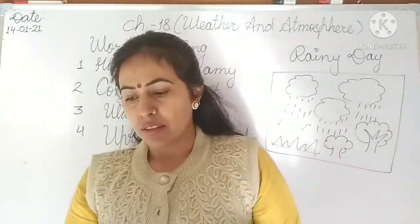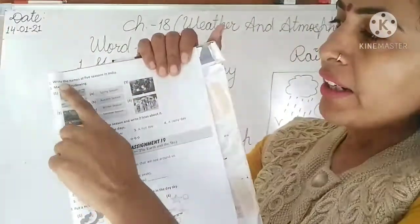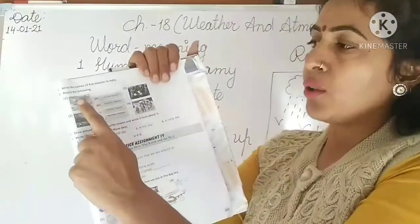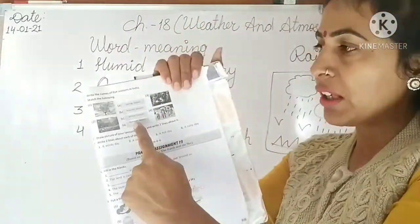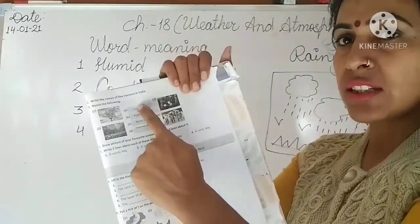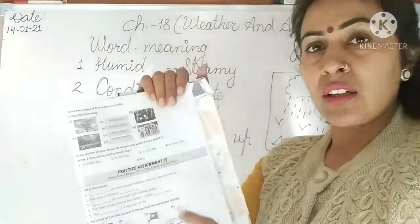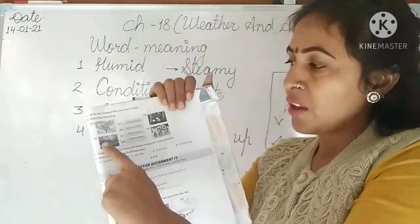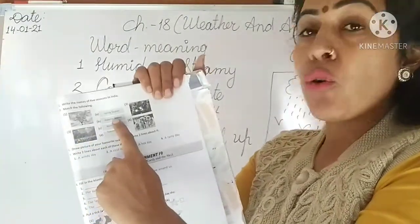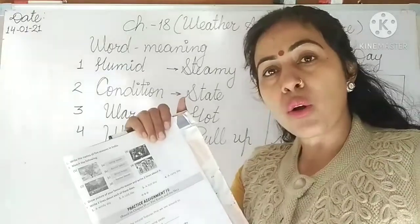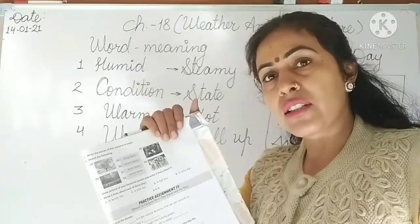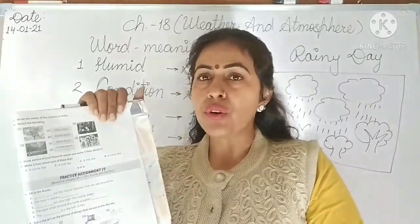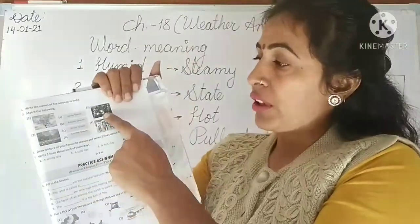That is the word grid exercise. Next, write the names of five seasons in India — write this in your notebook. Next, match the following: look at the pictures and match them with the given season names. Spring season is the most beautiful season — there are flowers, blooms, and greenery, so match it with that picture. Autumn season is when all trees shed their leaves — match accordingly. Winter season is very cold outside — match winter with its picture.